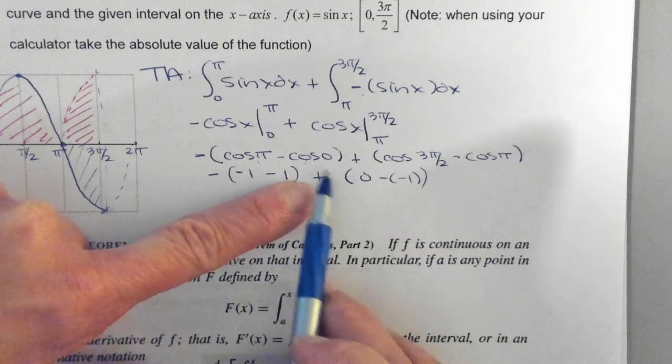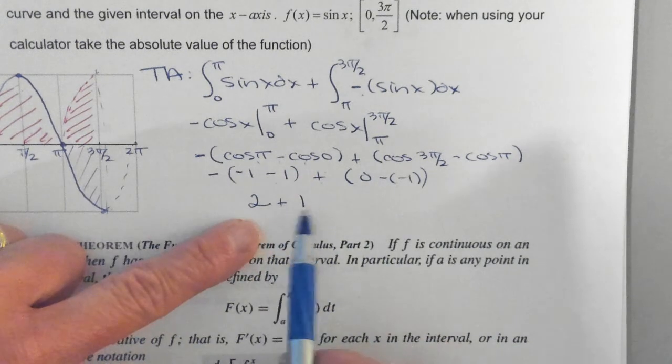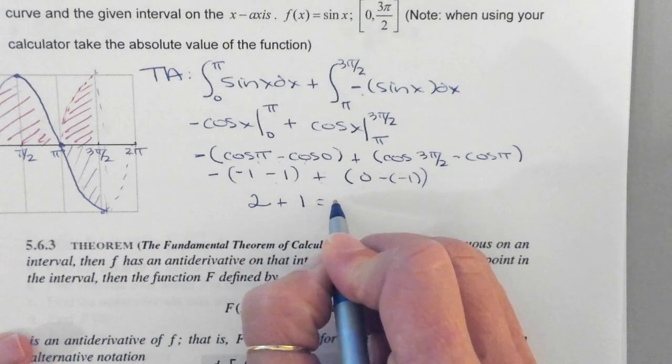Now, if I hadn't taken the opposite of that, wouldn't that be minus 1? So I have to be careful. So this answer, the total area is 3.